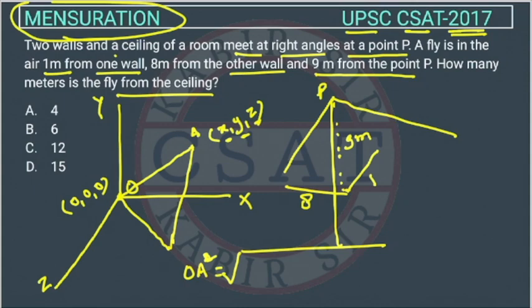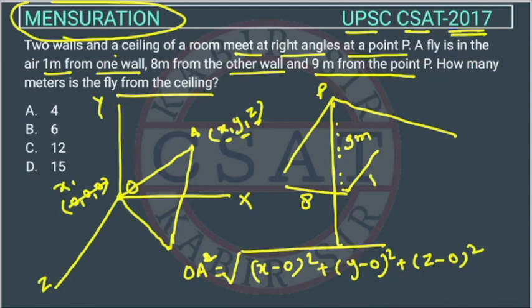This will become x minus 0 square plus y minus 0 square plus z minus 0 square. Do not consider 0 here, just consider x1, x2, y1, z1. Then it will look good. So this is x minus x1, y minus y1, z minus z1. This is the formula.